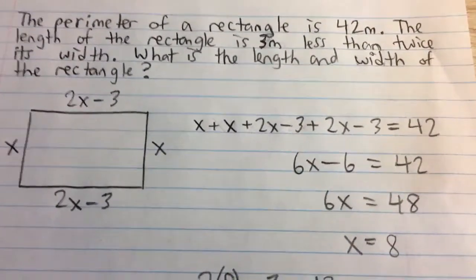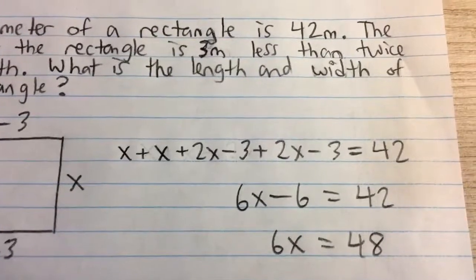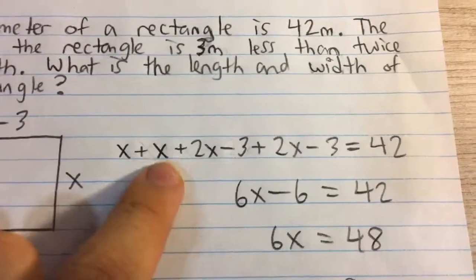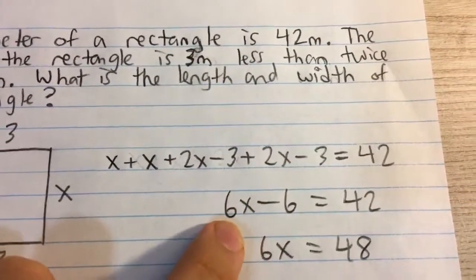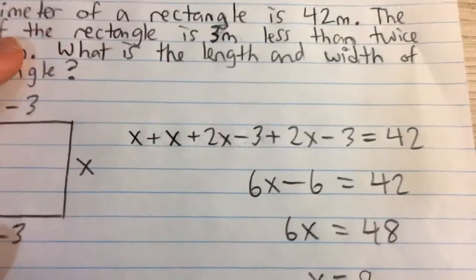So x plus x plus 2x minus 3 plus 2x minus 3, that's equal to 42. So we can collect like terms, x plus x plus 2x plus 2x, that's 6x minus 3 minus 3, that's minus 6, equal to 42.